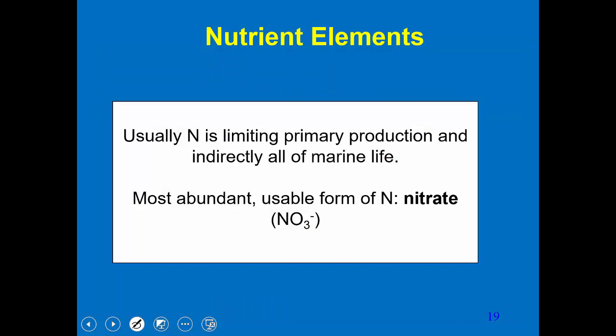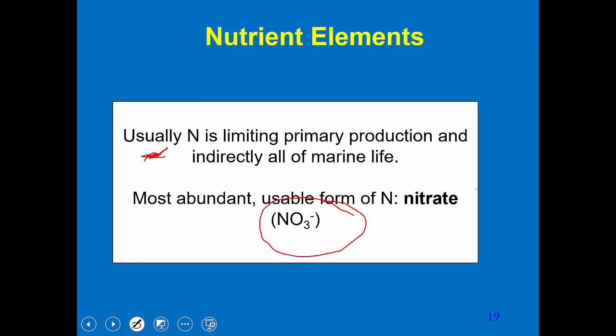Given all those different nutrients, an important question is which is most important — which is limiting rates of primary production and thus limiting the rest of the food chain? The answer for the ocean is usually nitrogen. The most abundant form — occurring in the highest concentrations — is nitrate because of its high concentration in the deep waters.